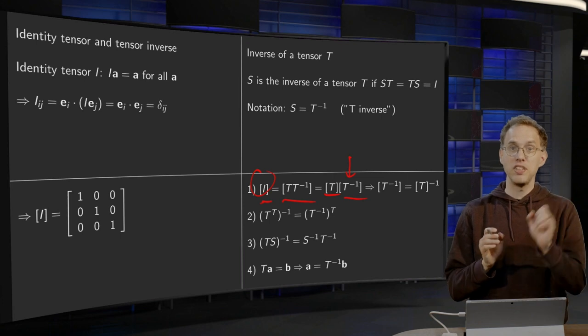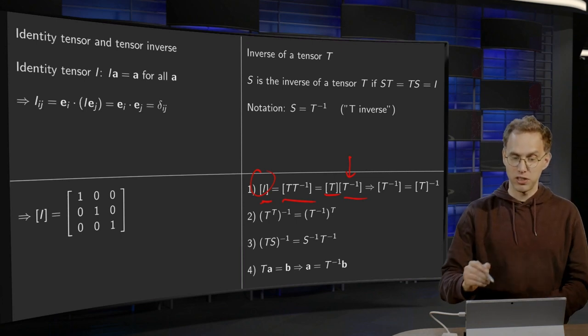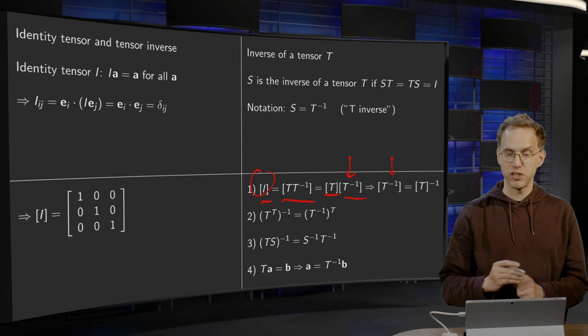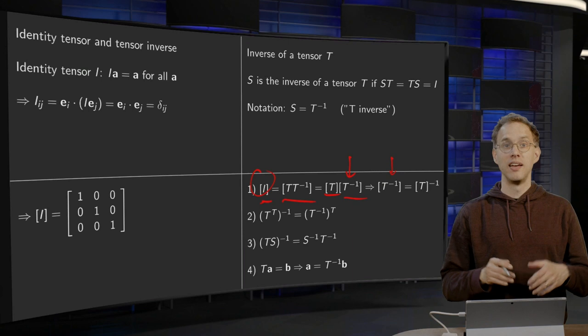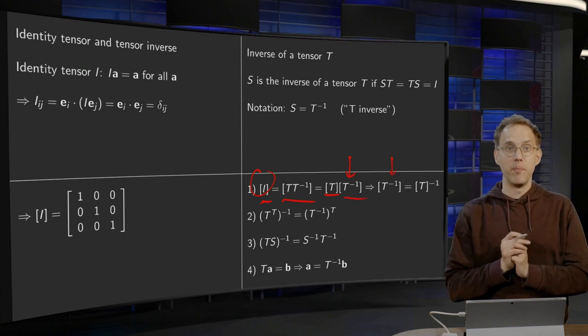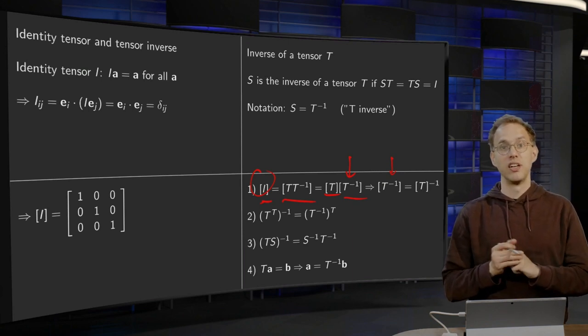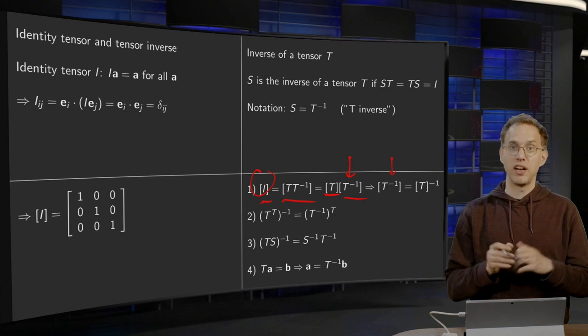Well, together with T, it has to give the identity matrix. So the matrix of T inverse has to be the matrix of T, inverted. Exactly what you would expect. The matrix of the inverse of a tensor is just the inverse of the matrix of the tensor.